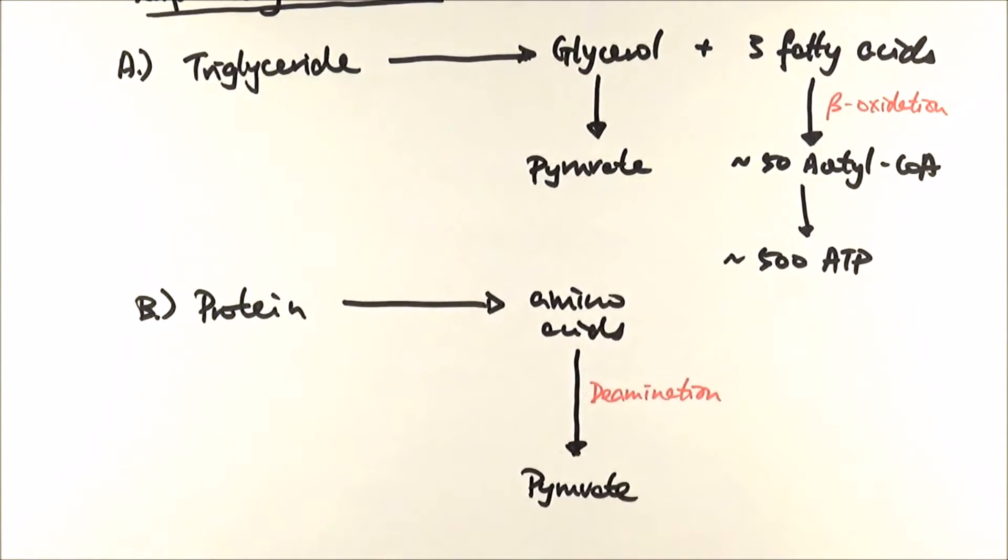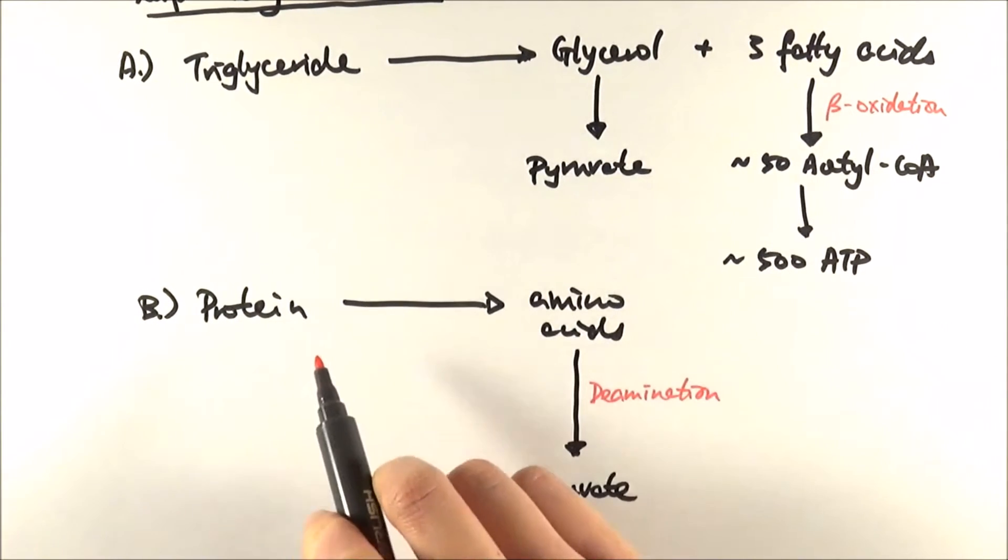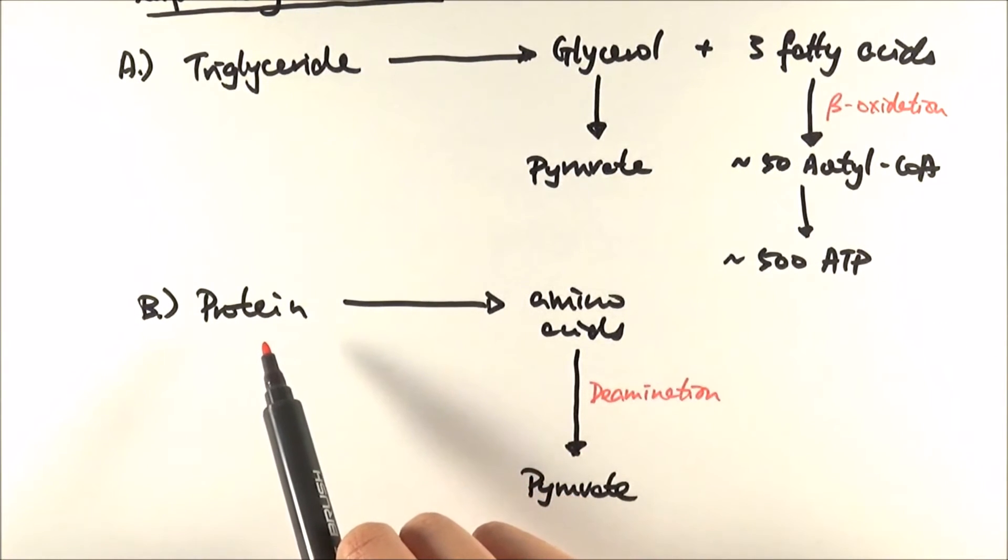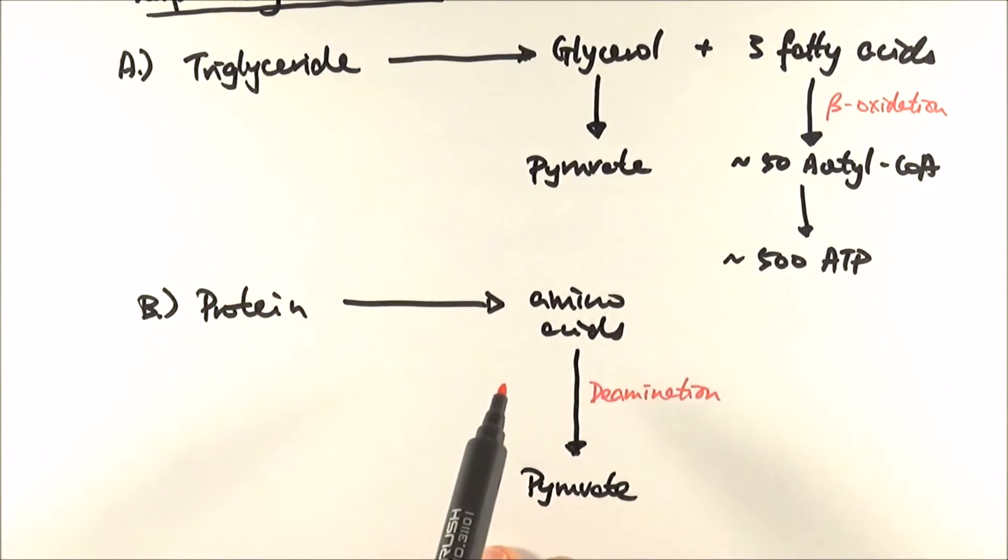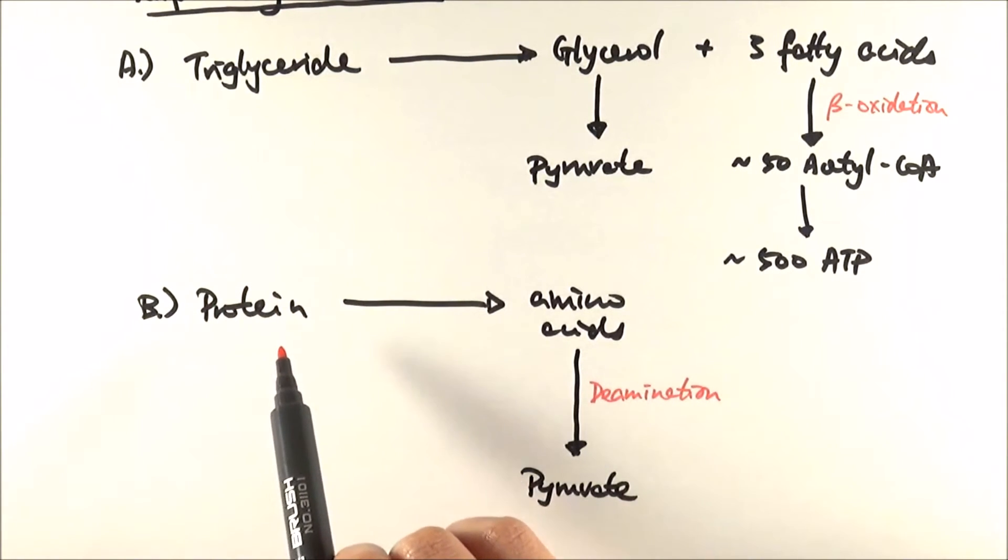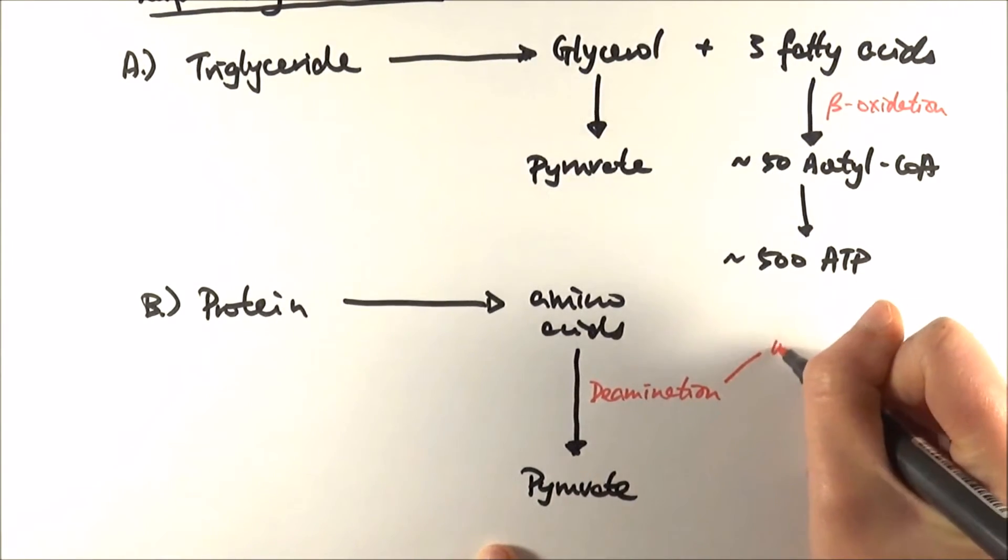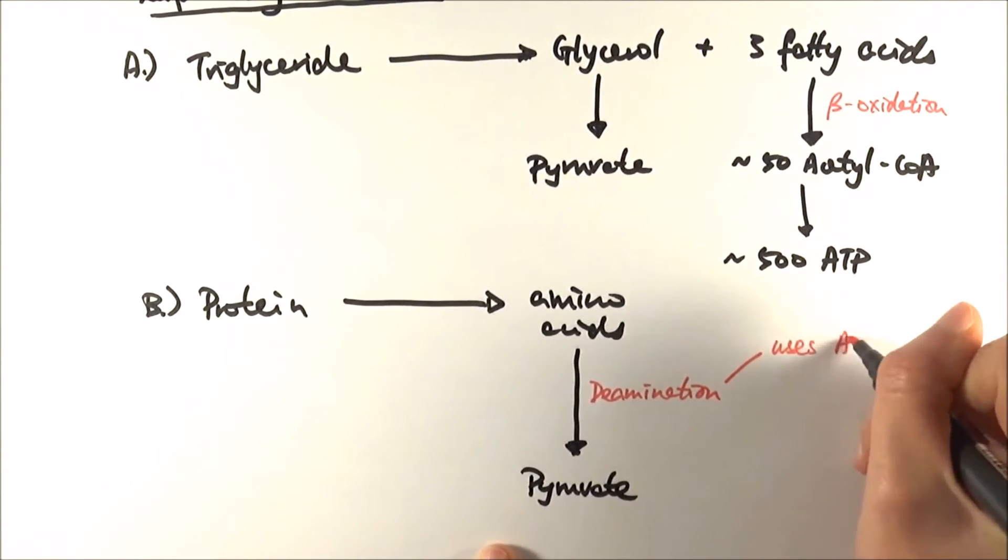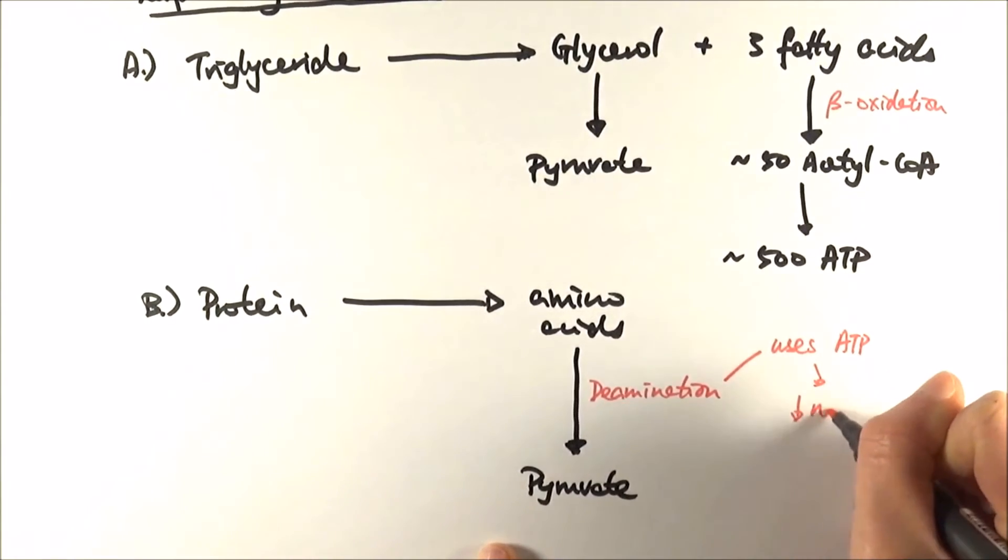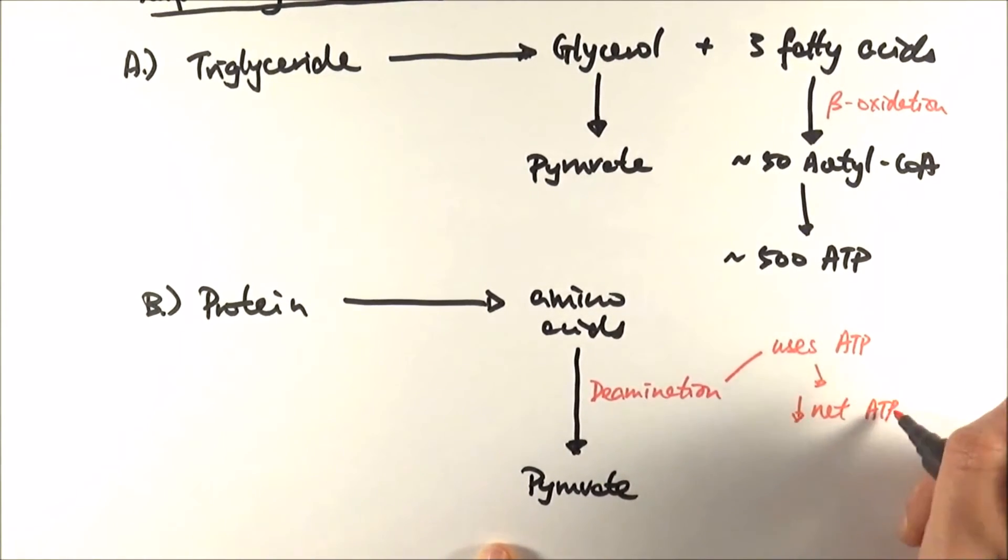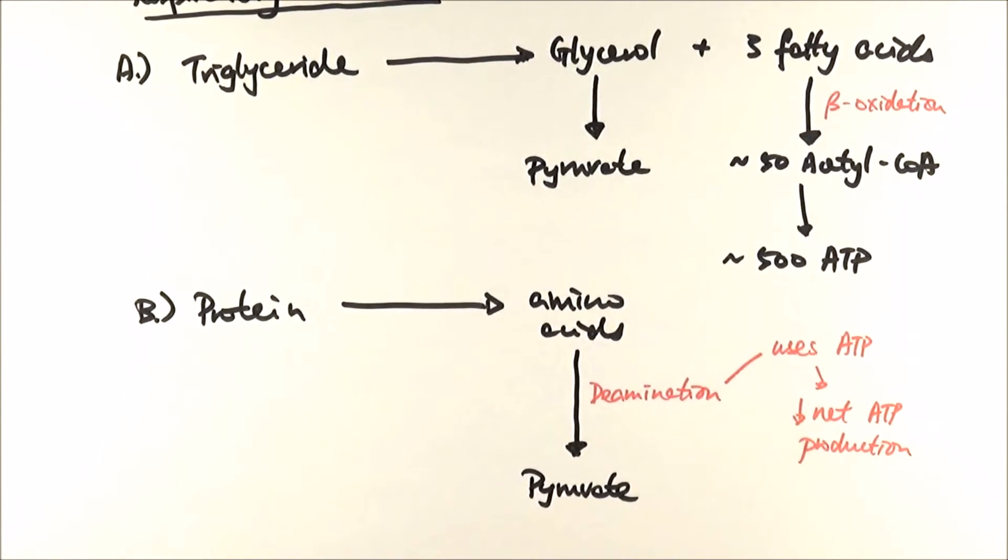Pyruvate then goes off into link and Krebs, generating lots of ATP. There are a couple of reasons why we want to avoid using protein for respiration: number one, it makes up all the enzymes and structural components, so if we start using up our proteins in respiration we're losing muscle mass—you become thinner and lose enzymes as well. Apart from that, deamination actually uses up ATP, so you're decreasing the overall or net ATP production, which is not very efficient and therefore not ideal.